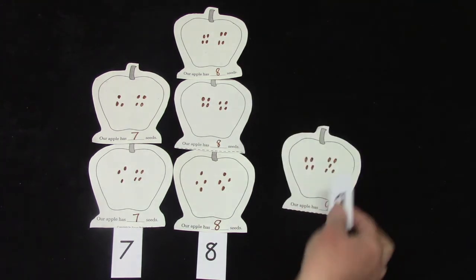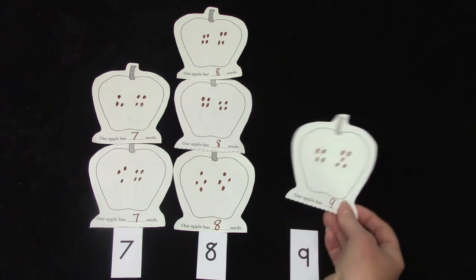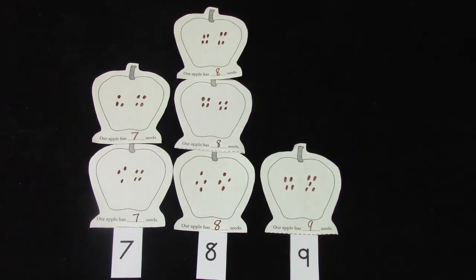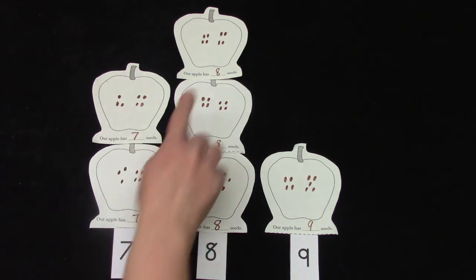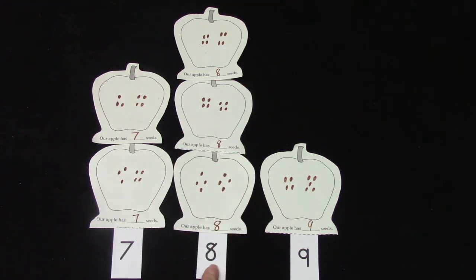And then there's just one left. And it had nine seeds. We can take a look at our graph here and see that there were two apples that had seven seeds, three apples that had eight seeds, and just one apple that had nine seeds.